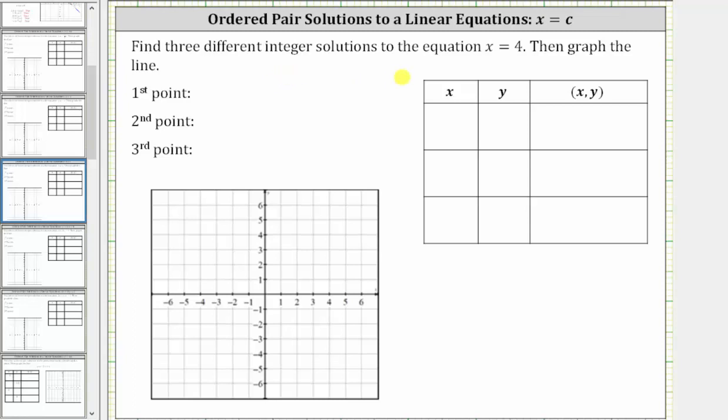We're asked to find three different integer solutions to the equation x equals four and then graph the line. Each solution is an ordered pair in the form of x comma y that satisfies the equation or makes the equation true. Notice our equation only contains one variable. Our equation is x equals four.